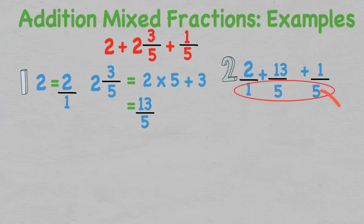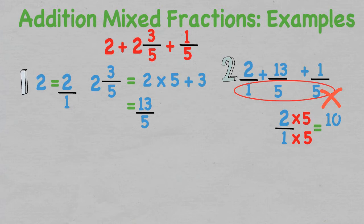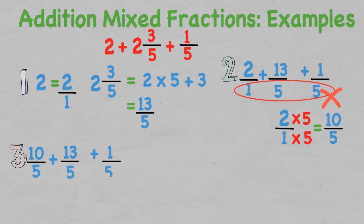In this case the lowest common denominator is 5, as all the denominators can go into 5. To get 2 over 1 to over 5, we multiply the denominator by 5 — whatever we do to the denominator we must do to the numerator — giving us 10 over 5. We now have three improper fractions that are all alike. We add the numerators together but not the denominators: 10 plus 13 plus 1 leaves us with 24 over 5.